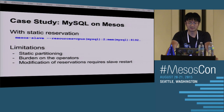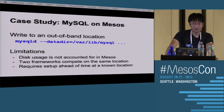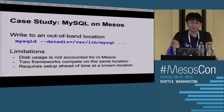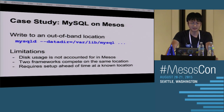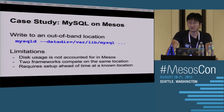Also, currently modifying slave configuration requires a slave restart, which means you have to kill all the running tasks on that node. For the data persistence problem, the workaround is to write to an out-of-band location — for example, start MySQL server and specify the data directory to be /var/lib/mysql. It's a well-known location outside the sandbox, so it won't be garbage collected. However, this could lead to isolation problems: disk usage by the MySQL server is not accounted for by Mesos and could affect other tasks running on the same box. Also, two frameworks could compete on the same out-of-band location, leading to non-deterministic results.